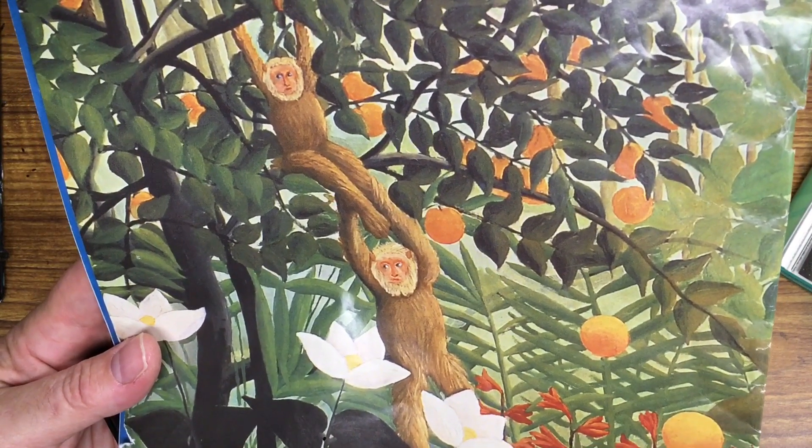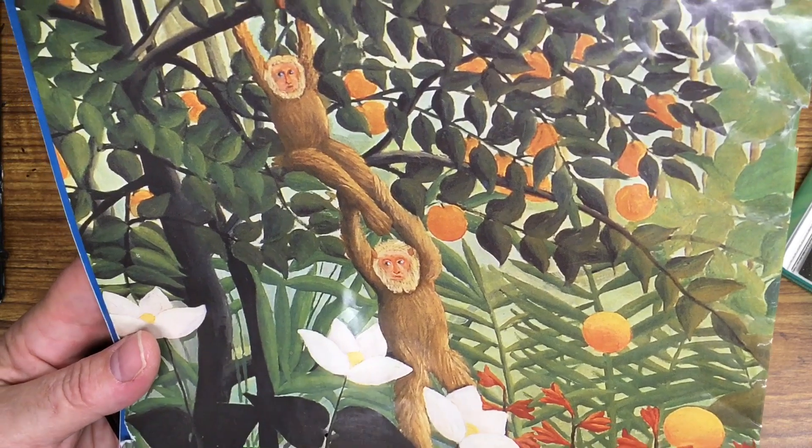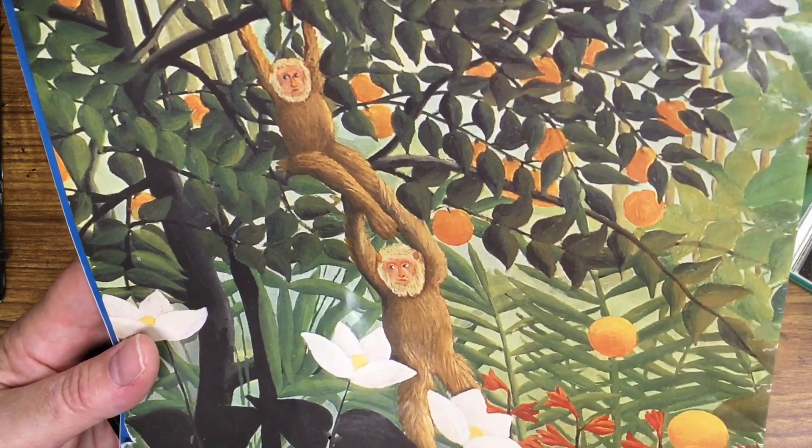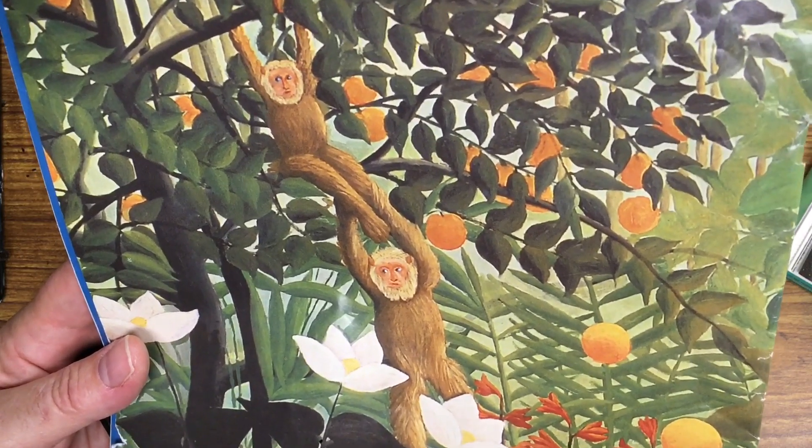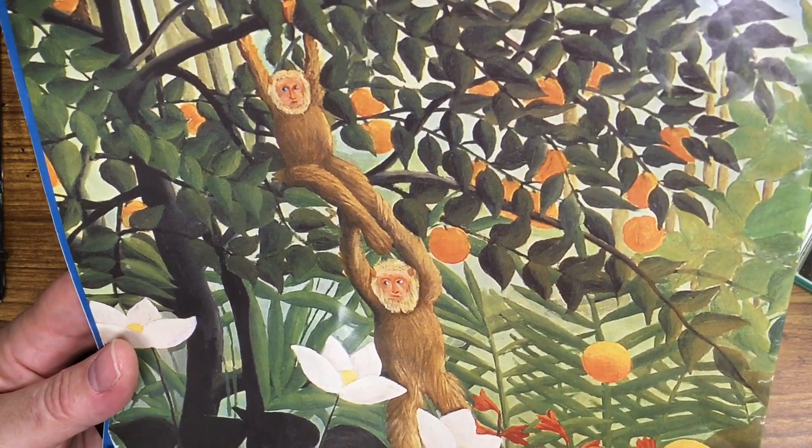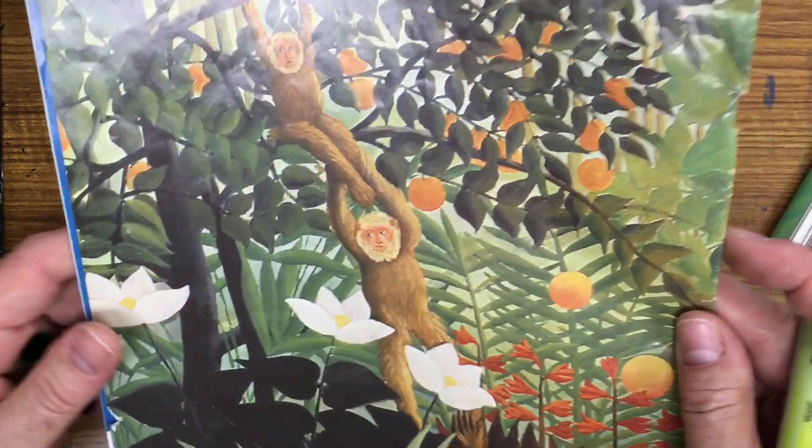Next, we're going to go ahead and do Henri Rousseau's middle ground. In the middle ground, you will see all kinds of things going on in his paintings. And the more you look, the more you'll see. Sometimes things are hidden in his fantasy jungle paintings.